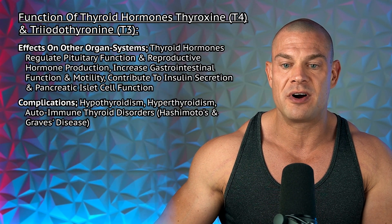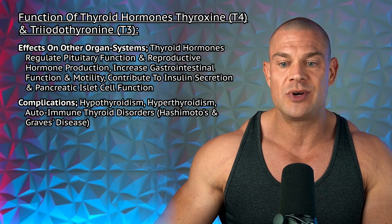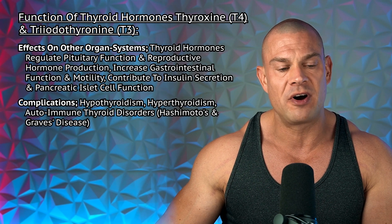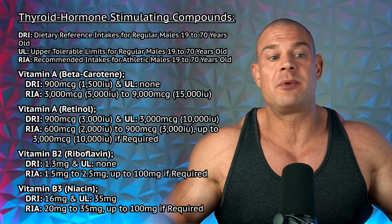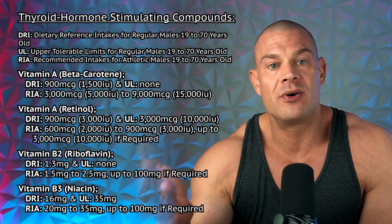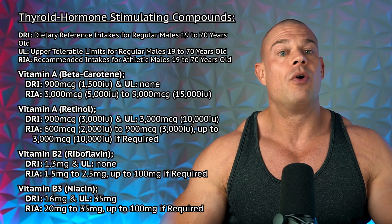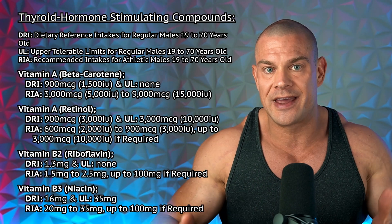Thyroid hormones regulate pituitary function and reproductive hormone production, increase gastrointestinal function and motility, and contribute to insulin secretion and pancreatic islet cell function — all effects on other organ systems. Various complications regarding thyroid hormones include hypothyroidism, hyperthyroidism, and autoimmune thyroid disorders like Hashimoto's or Graves' disease. This is essentially an aggregation — a summary — of all the thyroid hormone stimulating compounds, whether that's the production of thyroid-stimulating hormone, thyroxine, or triiodothyronine, or the activation of thyroid receptor alpha-1 to 3 or beta-1 to 3.